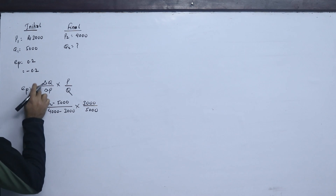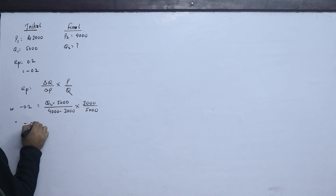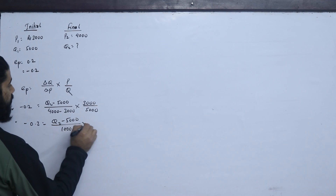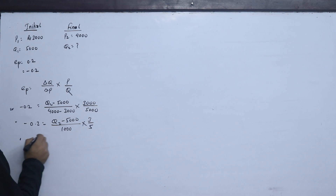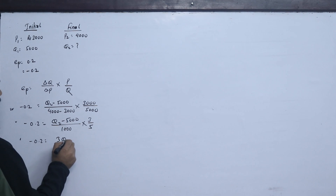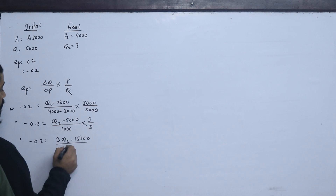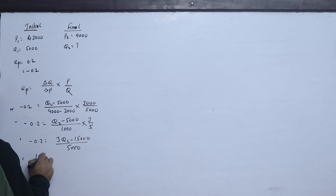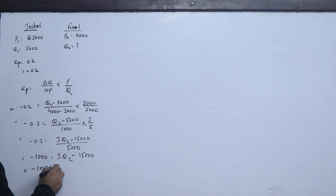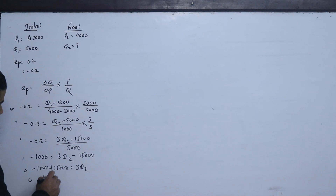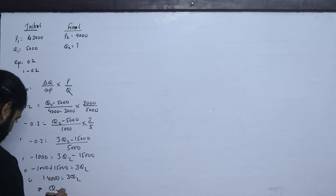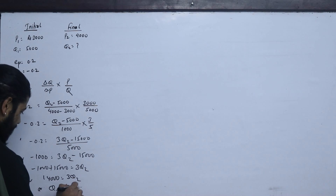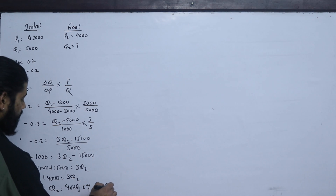Setting up: minus 0.2 equals (Q2 − 500) / 1,000 × (3,000 / 500). This simplifies to: minus 0.2 equals (Q2 − 5,000) — scaling through — giving 3Q2 − 15,000 on one side. Solving: 3Q2 = 14,000, so Q2 = 14,000 / 3 ≈ 4,667.